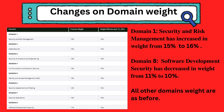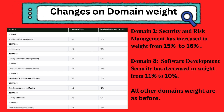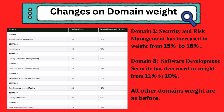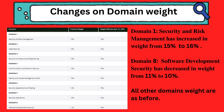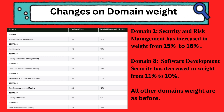Changes on domain weight: Domain 1, Security and Risk Management, has increased in weight from 15% to 16%. Domain 8, Software Development Security, has decreased in weight from 11% to 10%. All other domain weights are as before.